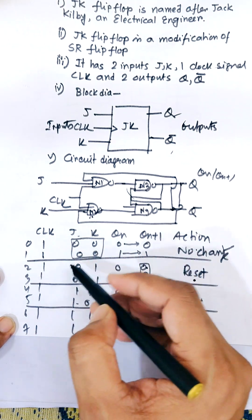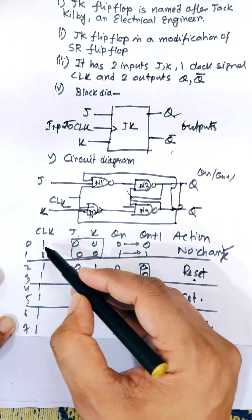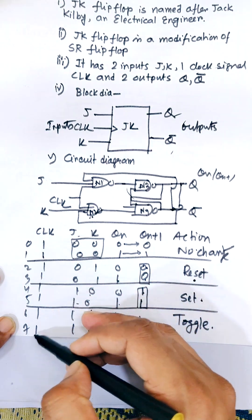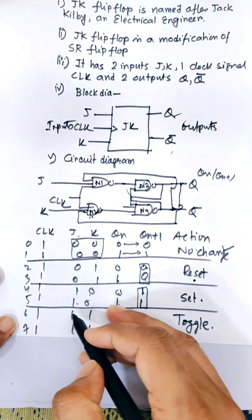Now first of all, all inputs are activated with the help of CLK. When CLK is 1, then all our inputs will be activated.